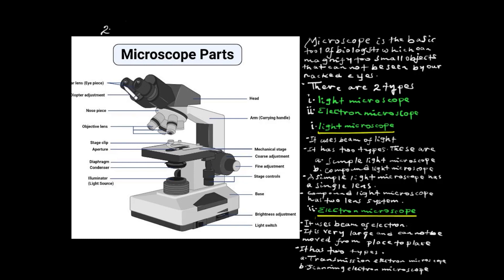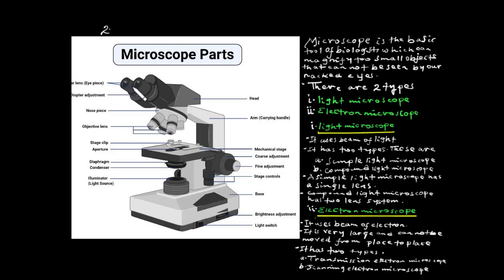This is called binocular. A binocular microscope has two eyepieces for both eyes, for example to gather more light.